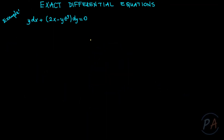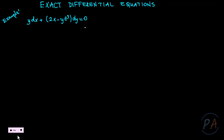Hi everyone, today we are going to solve one more first-order differential equation given in the form: y dx plus (2x minus y times e^y) dy equals zero. The equation is given in differential form, so we can check if the equation is exact or not.